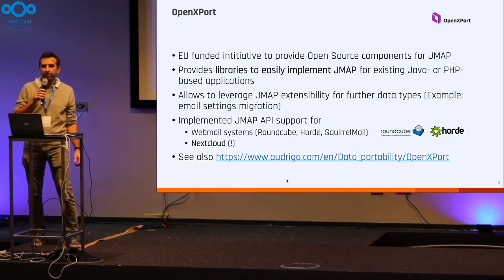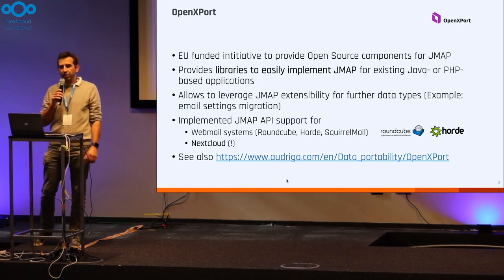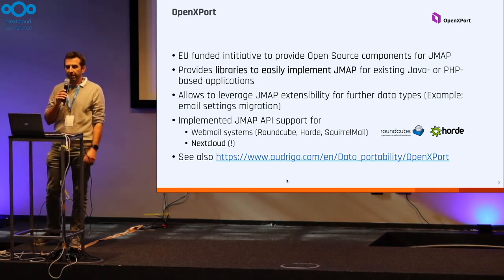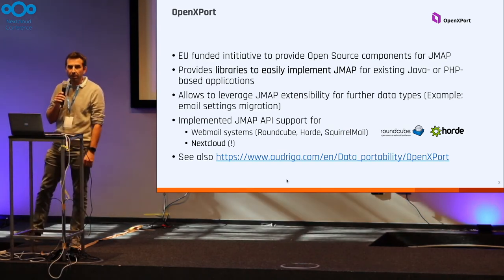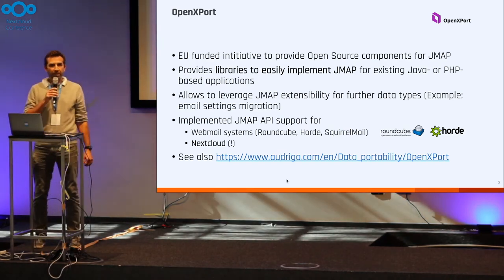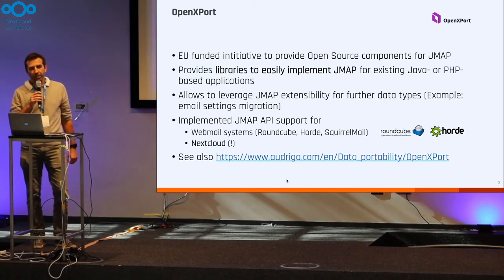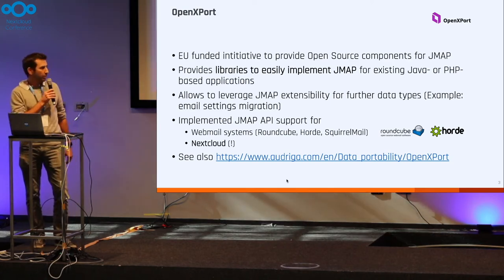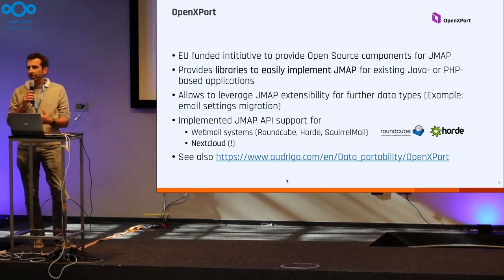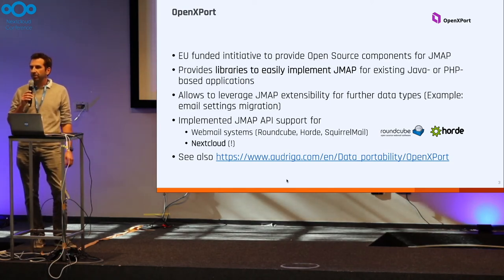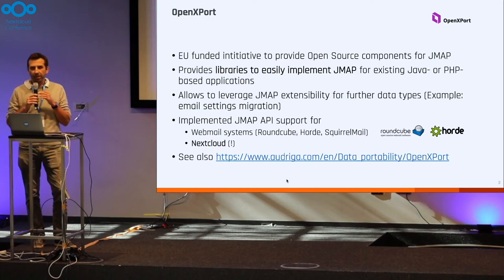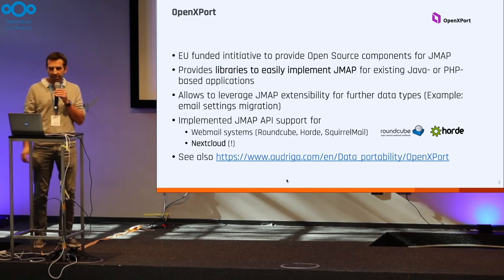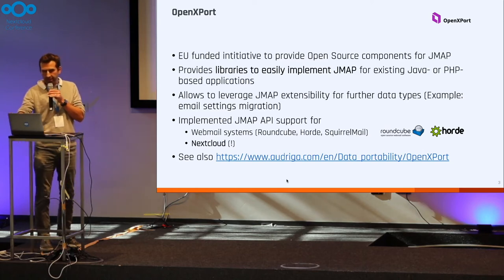Within the project we implemented JMAP API support for several webmail systems like Roundcube and Squirrelmail, and we also implemented JMAP support for Nextcloud. If you want more information, you can go to the project homepage — the slides will be shared later so you can easily find the links.